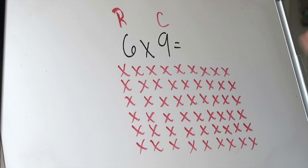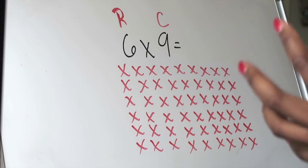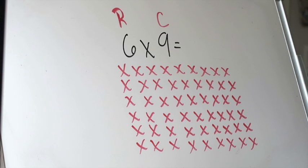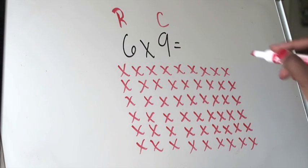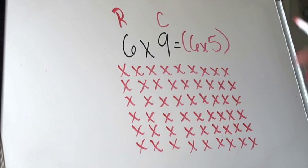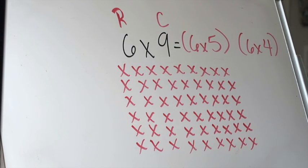Now that I've confirmed my array is arranged correctly, I'm going to think: I'm a little unsure of six times nine, not really feeling very confident that I'll be able to just multiply that. So I'm going to think about which of these two factors I can break down to create two smaller multiplication sentences I'm a little more comfortable with. I'm going to break down the nine because I'm a little less comfortable with my facts of nine, and instead of using nine, I'm going to think of nine as five plus four.